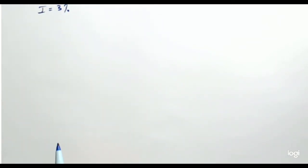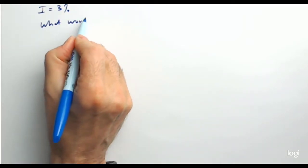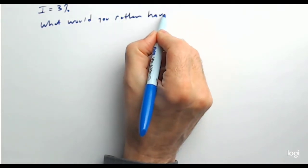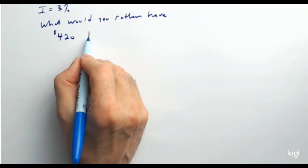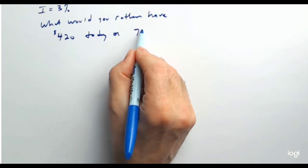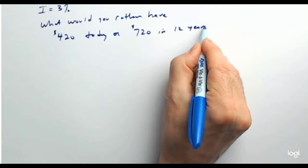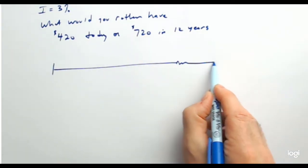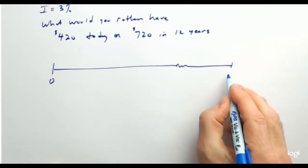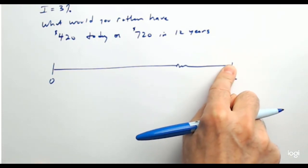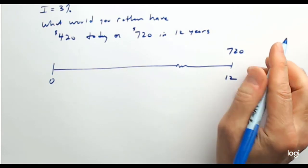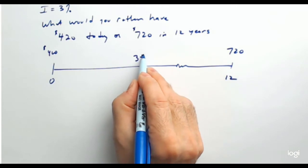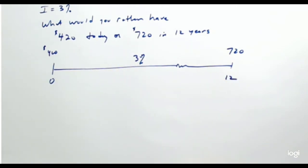Let me give you another example. Assume interest rates are 3%. What would you rather have: $420 today or $720 twelve years from now? Which would you rather have? We'll have a timeline with time zero and 12 years out — I won't draw all 12 periods. We know we have $720 at year 12, $420 at time zero, and the interest rate is 3% for the whole timeframe. Which one is better?